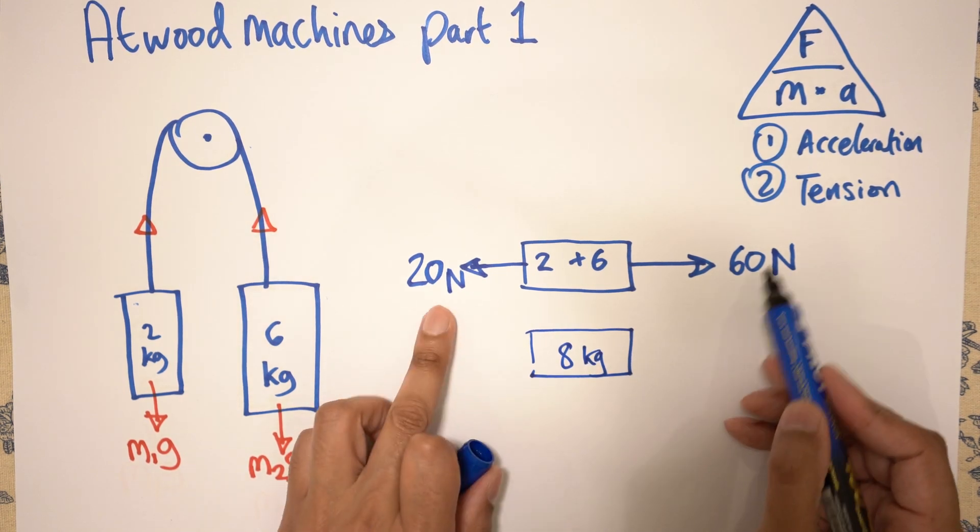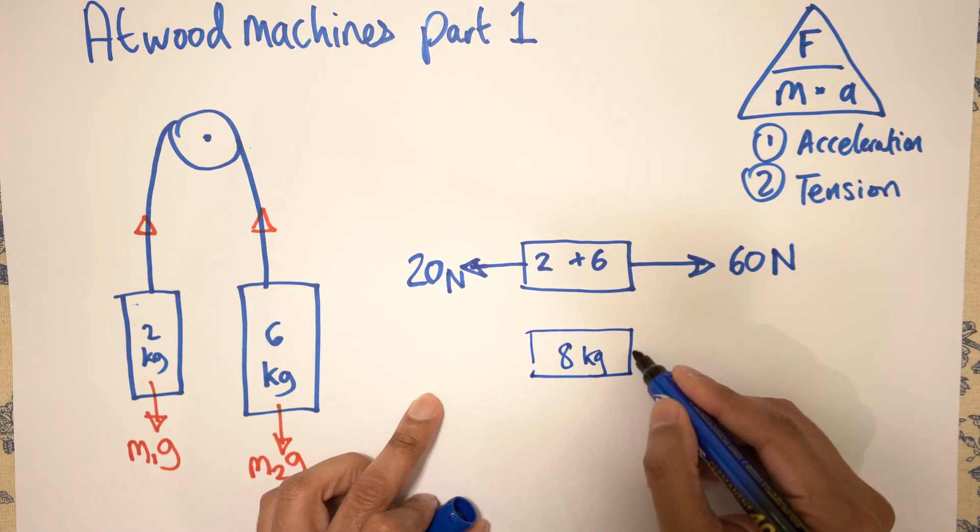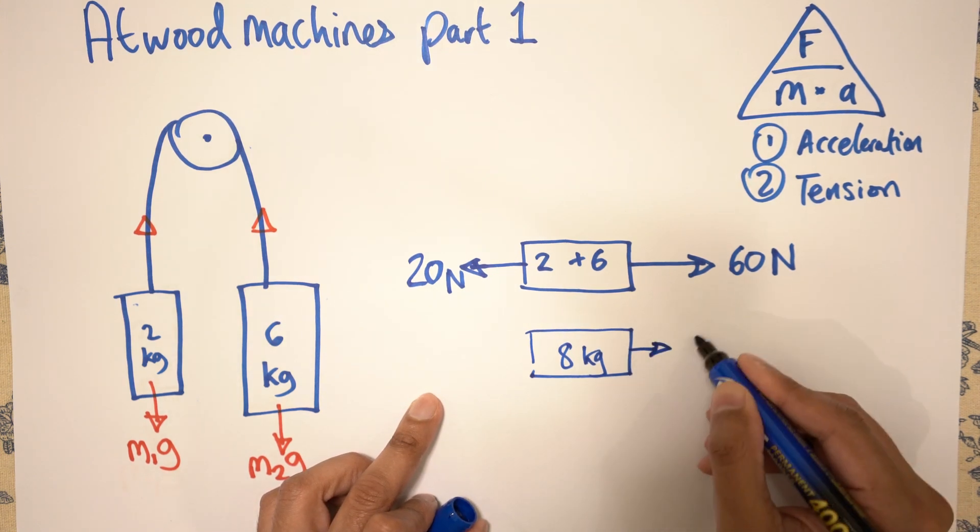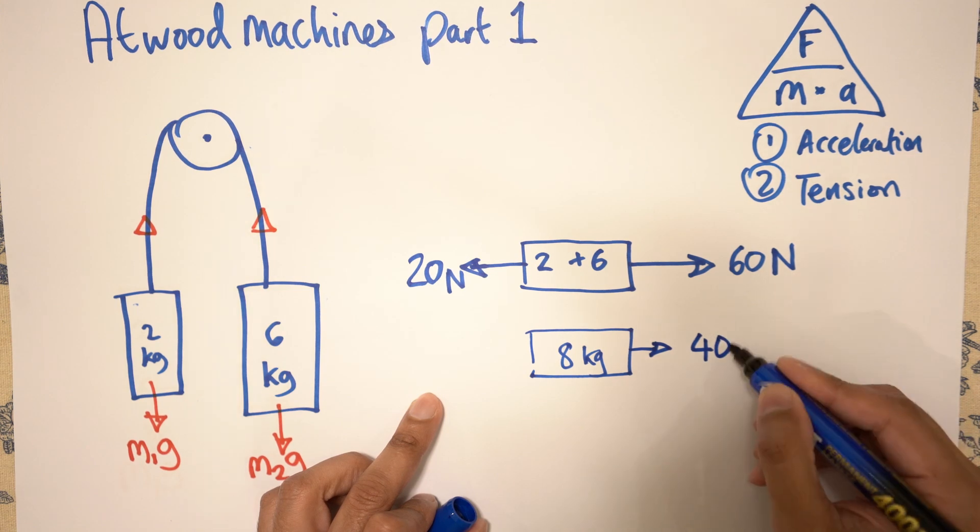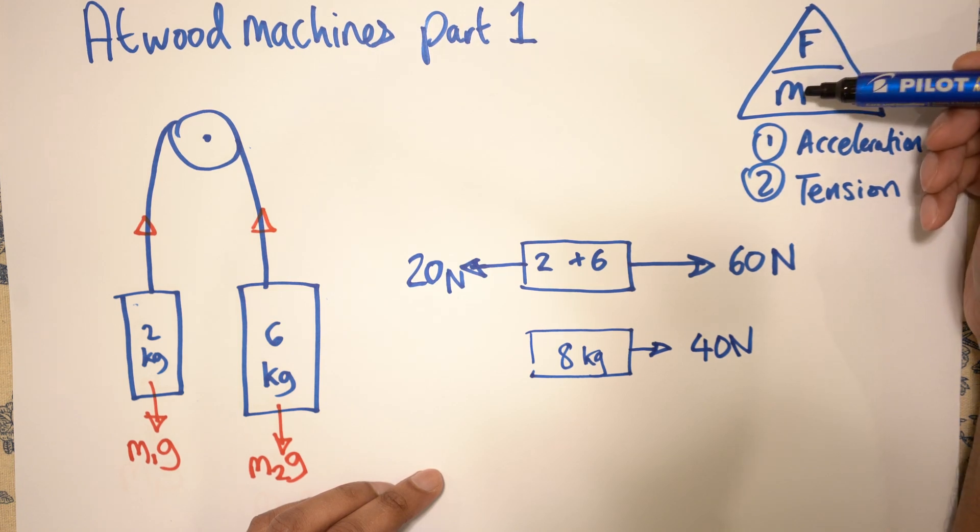And you take the big one, you subtract the smaller one. So in this case, we've got 60 minus 20, which is 40 newtons. And then to work out your acceleration, acceleration is net force divided by mass.